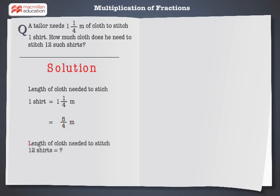Now, length of cloth required to stitch 12 such shirts is equal to length of cloth needed to stitch 1 shirt multiplied by the number of shirts to be stitched. That is 12 shirts here.